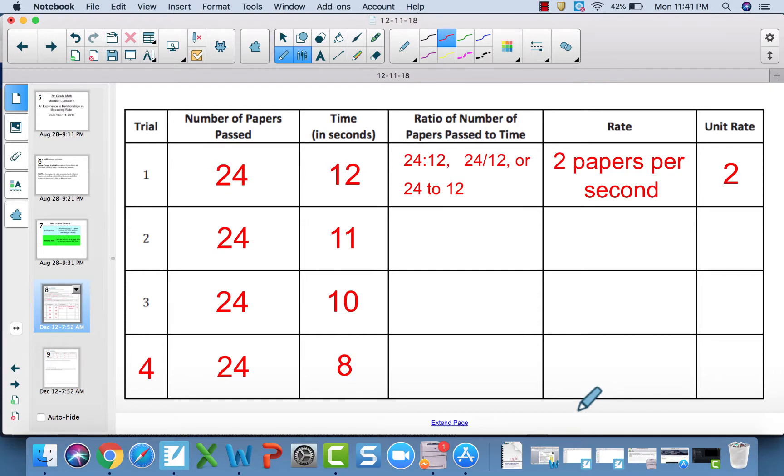Now moving down to the table, please fill in what you have here written in red. We're going to assume we did an experiment where our goal as a class was to pass out 24 papers as quickly as possible. We did this four different times. Every time it took us less time to pass out the 24 papers. And that makes sense, because as you practice something, generally you get faster, you get better at it. Think your multiplication facts, long division, or playing video games - the more you practice it, whatever that skill is, the better you become.